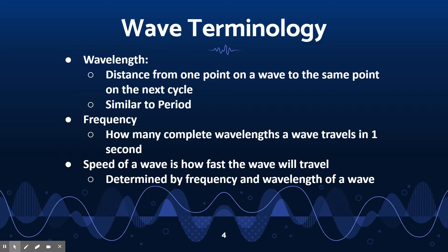The next piece is frequency. Frequency means how frequently a wave will actually oscillate — how many complete wavelengths travel in one second, and that one second is very important. Finally, the speed of a wave is how fast the wave is actually traveling. Different types of waves will travel at different speeds depending on the medium, whether it's space, solids, liquids, or gases.